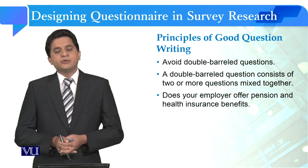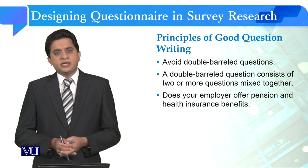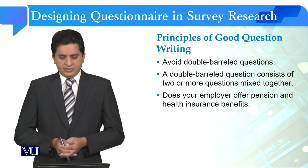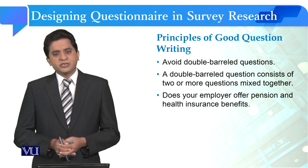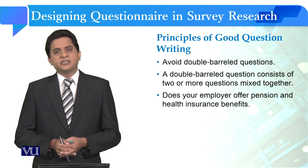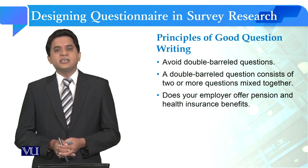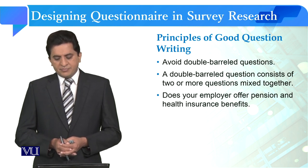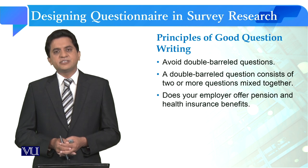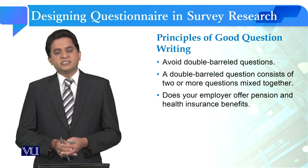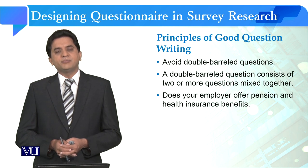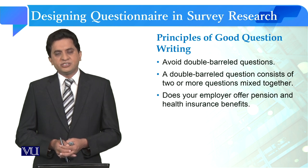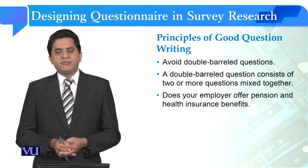Avoid double-barrel questions as well. A good questionnaire does not have double-barrel questions. A double-barrel question consists of two or more questions mixed together. For example: 'Does your employer offer pension and health insurance benefits?' — here you are asking two things at once. It should instead be separated into: 'Does your employer offer pension?' and 'Does your employer offer health benefits?'